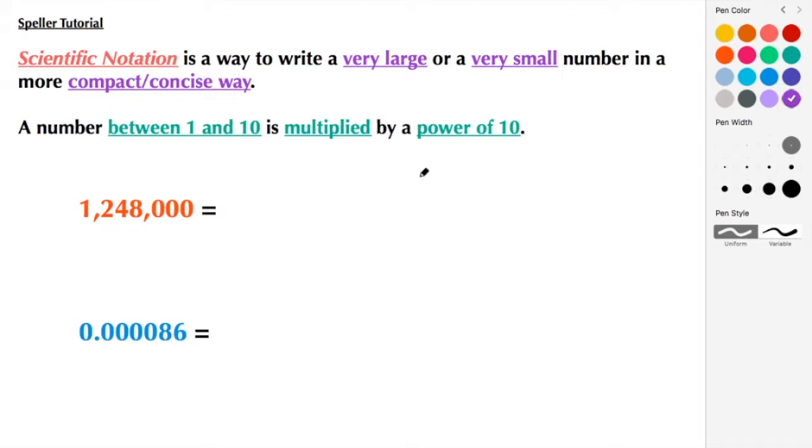The parts of scientific notation will be a number between 1 and 10 that is multiplied by a power of 10. So let's start here with this example where we have 1,248,000. It's understood that our decimal point is sitting here.